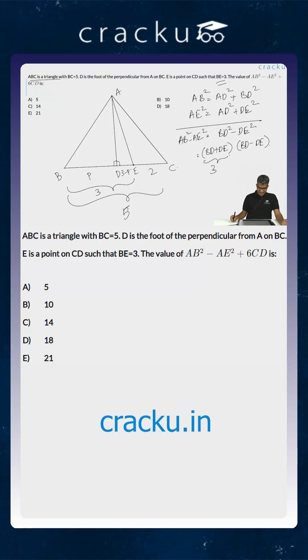And what is BD? BD is equal to P. We assume that this is equal to P units. This is P minus what is DE? DE is 3 minus P. This is equal to 3 into 2P minus 3 which is equal to 6P minus 9. That is the value of AB square minus AE square.